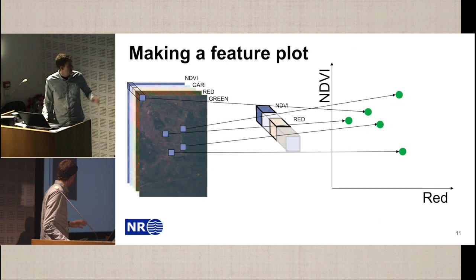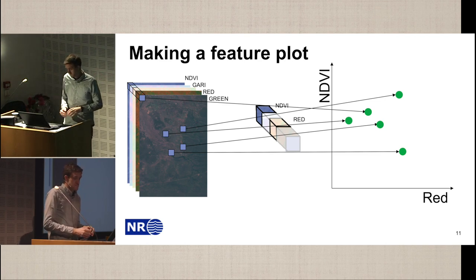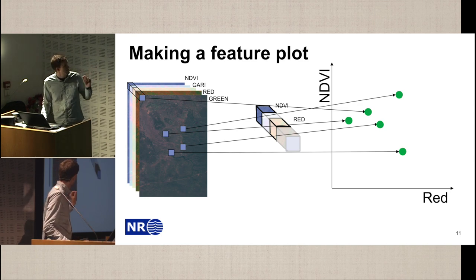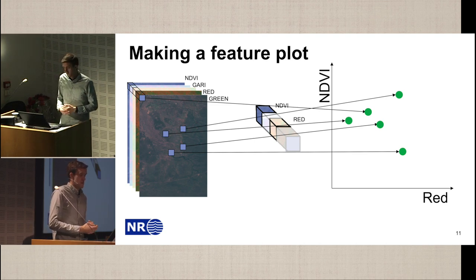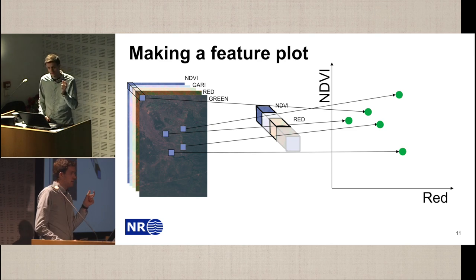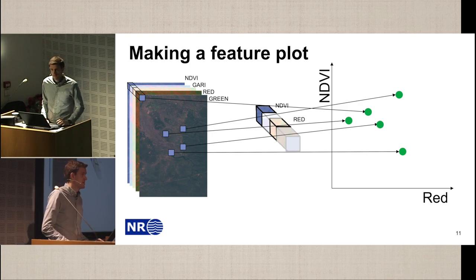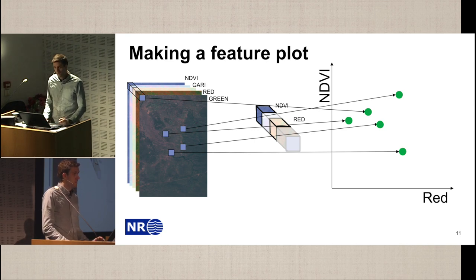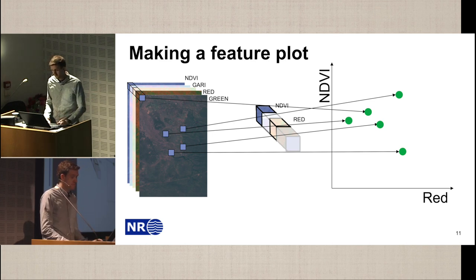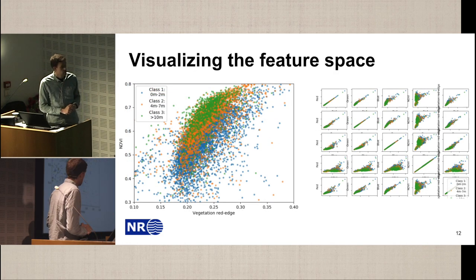Let's do some analysis. We have our different features — the different channels — and we can take one pixel from each of the channels. That gives us a feature vector, and one feature vector represents one sample. We want to classify the ground truth value for this pixel. If we take two of the channels, for instance the NDVI and the red channel, and make a plot, we can put this pixel in the feature plot.